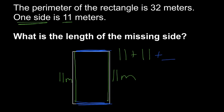plus some mystery number, and then plus that same mystery number, because these two sides are equal, and that has to give us a total equals 32, because 32 is the total distance around the outside.